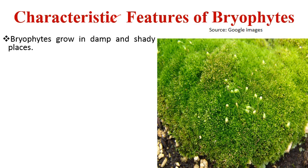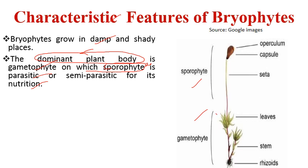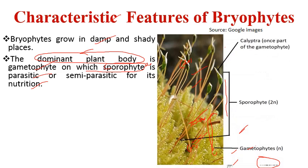Some unique features of bryophytes: these plants mostly grow in damp and shady places. The dominant and independent plant body is the gametophyte, on top of which the sporophyte — a diploid plant body — is parasitic or semi-parasitic for its nutrition and support. The plant body shows differentiation into leaf-like structures, stem-like structures, and root-like structures called rhizoids. The gametophyte is the main plant body, and the upper sporophyte is the diploid structure that produces haploid spores.